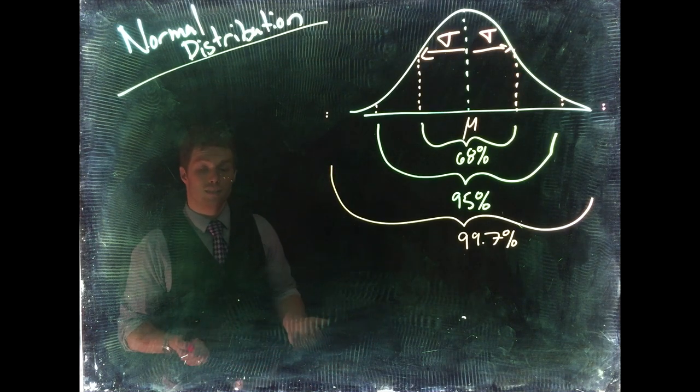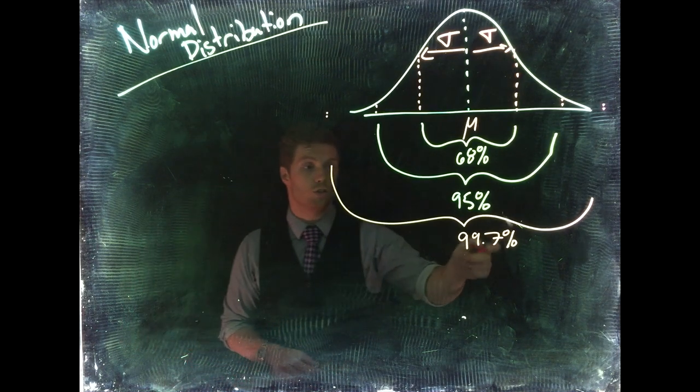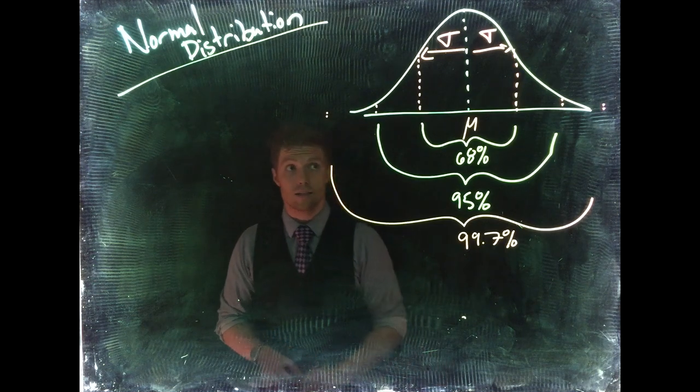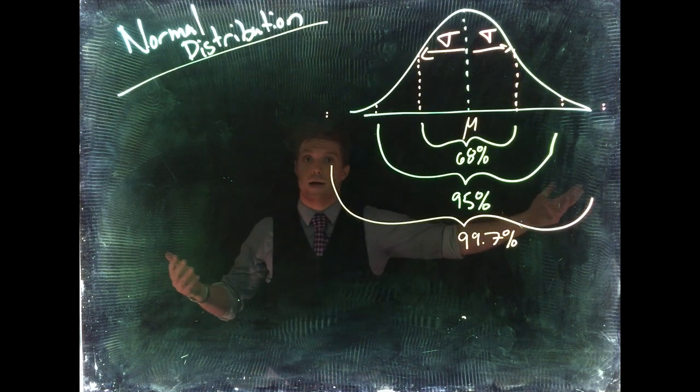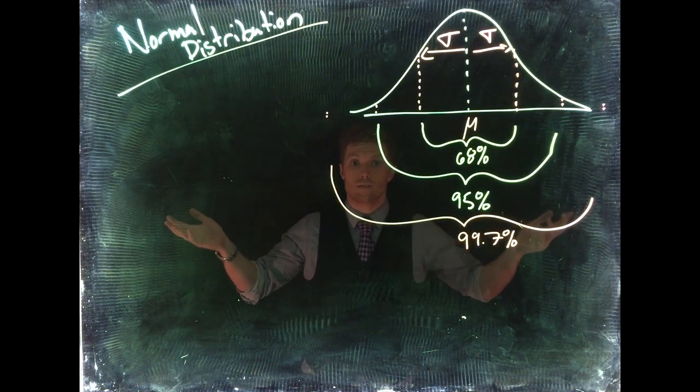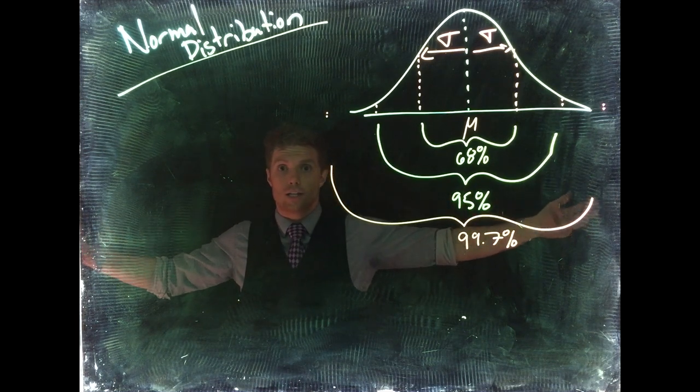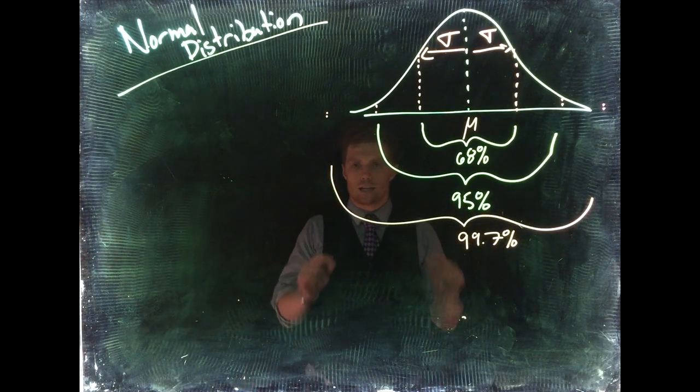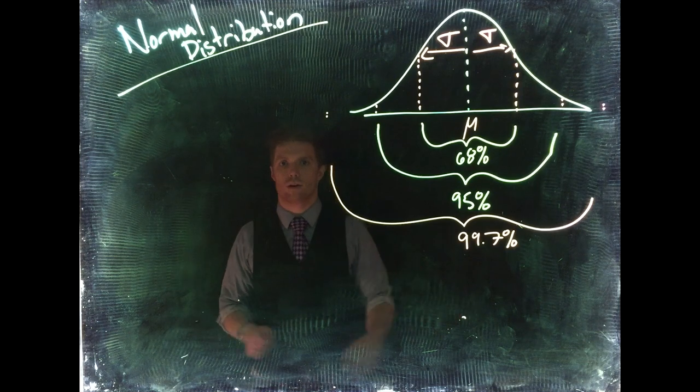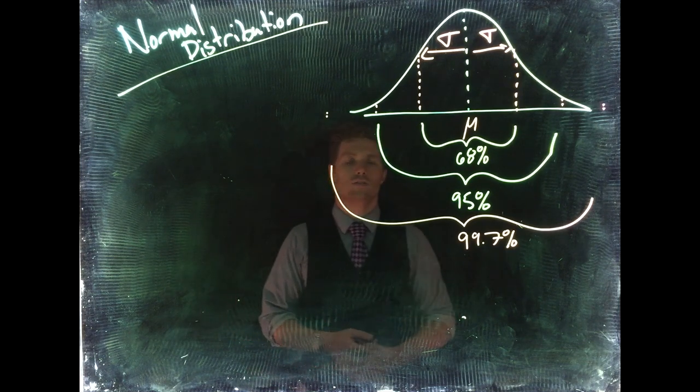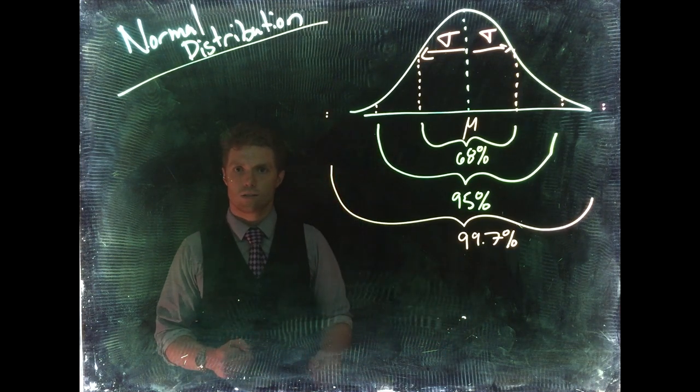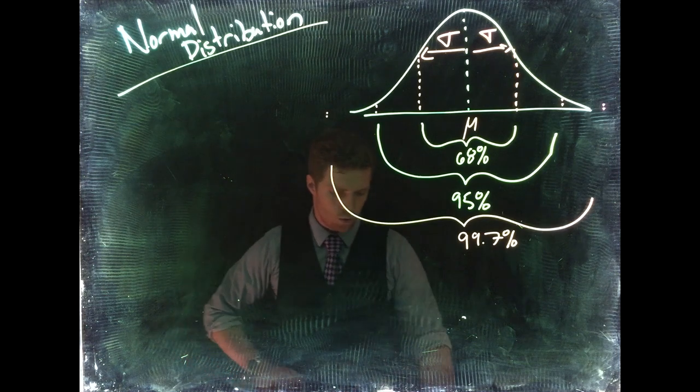So we can see as we go basically three standard deviations away, we've captured almost all of our data. Now technically, the normal distribution extends from positive infinity to negative infinity, so it goes in both directions forever. But as you go further and further away from the mean, the likelihood of these events decreases pretty significantly.